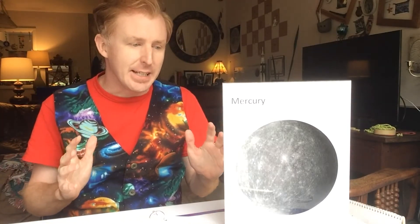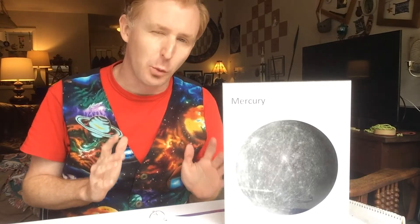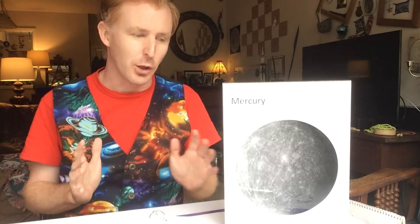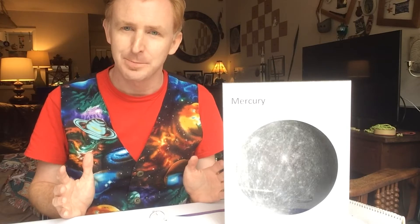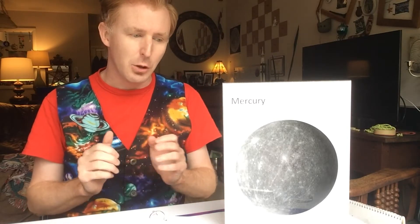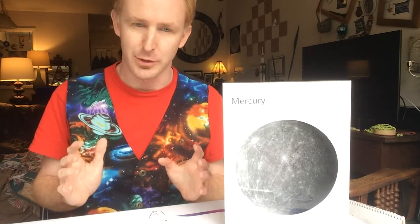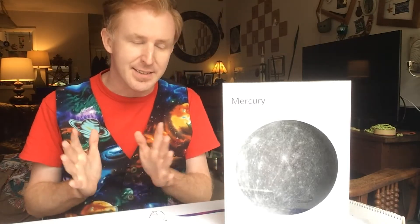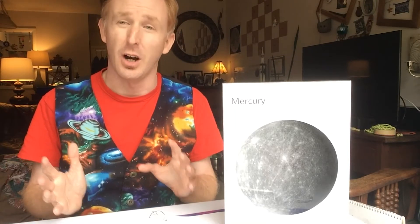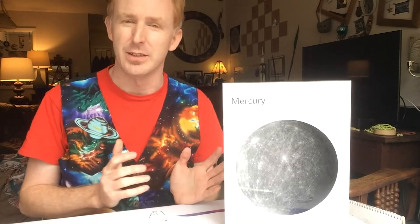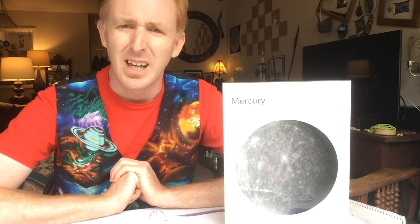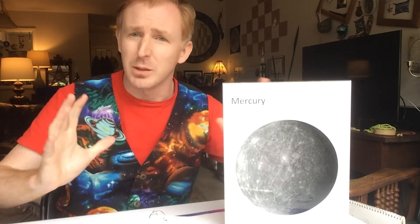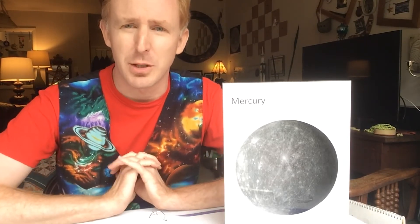Mercury can be anywhere between 840 degrees Fahrenheit — around 450 degrees Celsius — on the hottest sunlit side, to around negative 275 Fahrenheit or negative 170 degrees Celsius on the darker side not exposed to light. That makes it the most massive temperature gradient of any planet in our solar system.